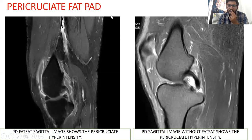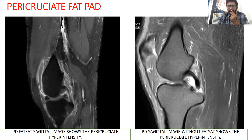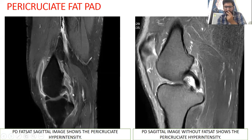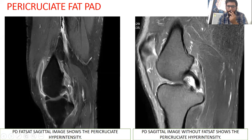The pericruciate fat pad is one of the fat pads located in the intercondylar notch of the tibia. It is intimately related to both cruciate ligaments. Hyperintensity in the pericruciate fat pad is one of the secondary signs of ACL tear. As seen in the sagittal images, a PD fat-sat image shows hyperintensity signal in the pericruciate fat pad, and a PD non-fat-sat image also shows signal in the pericruciate fat pad.